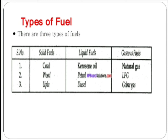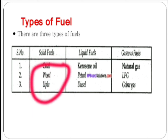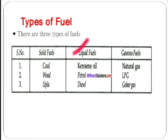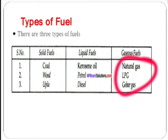Next point is types of fuel. There are three types of fuel: solid fuel, liquid fuel, and gaseous fuel. First, solid fuels: coal, wood, and upla (dung cake) are examples of solid fuels. Second, liquid fuels: kerosene, petrol, and diesel are examples of liquid fuels. Third, gaseous fuels: natural gas, LPG, and gobar gas (biogas) are examples of gaseous fuels.